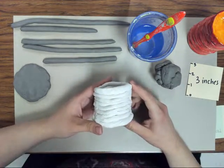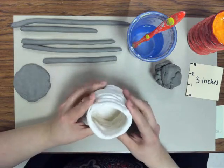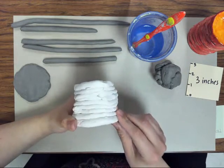Hi class, today we're going to make a clay coil pot. It's basically a cup and it has a lot of rings on it.